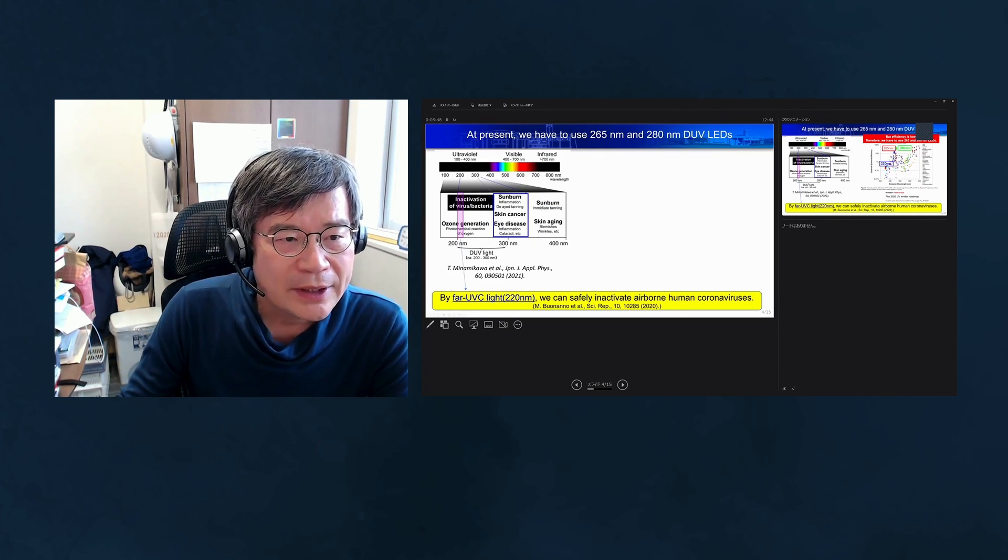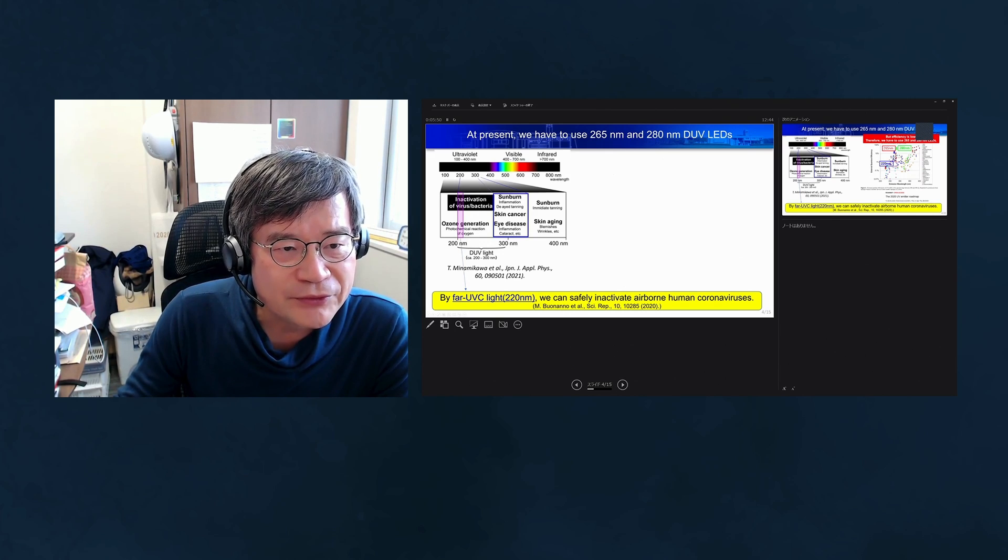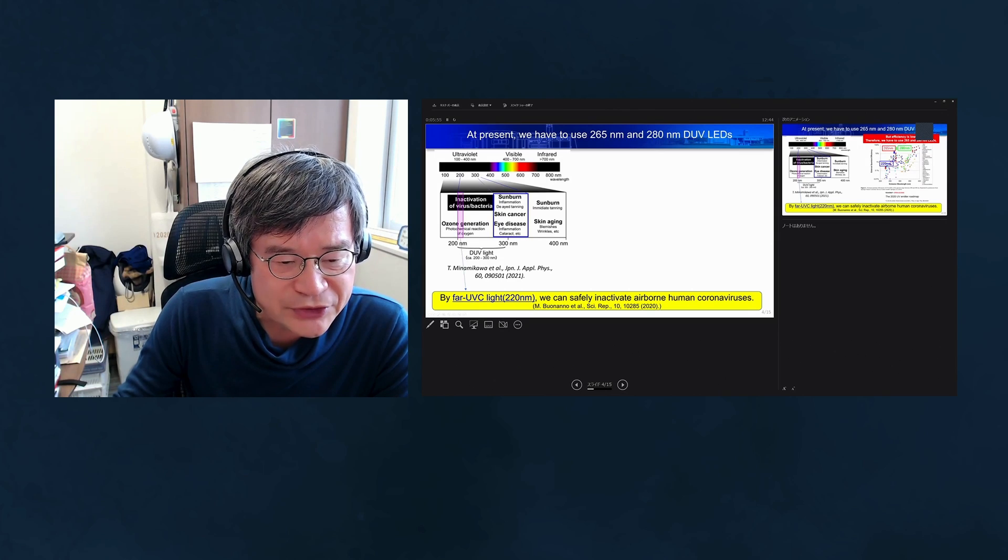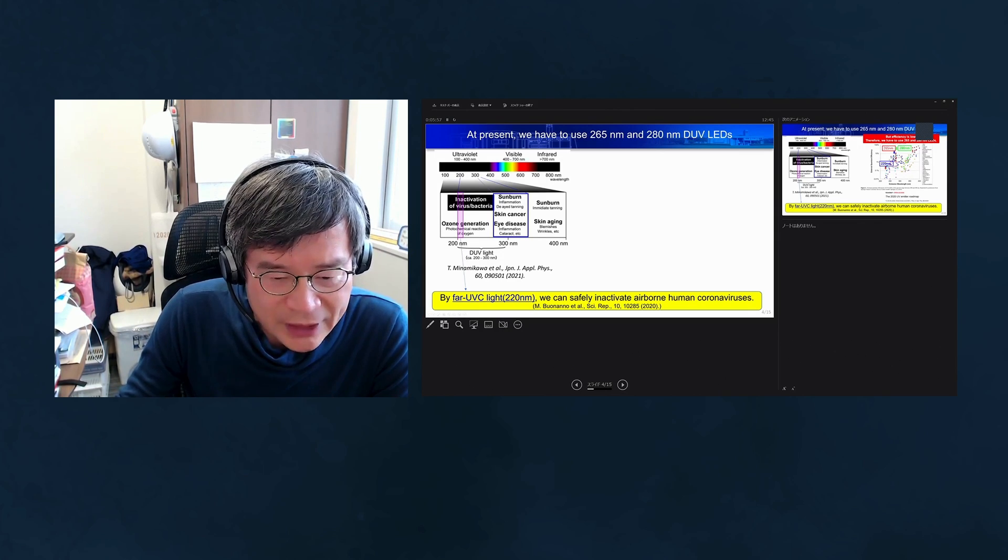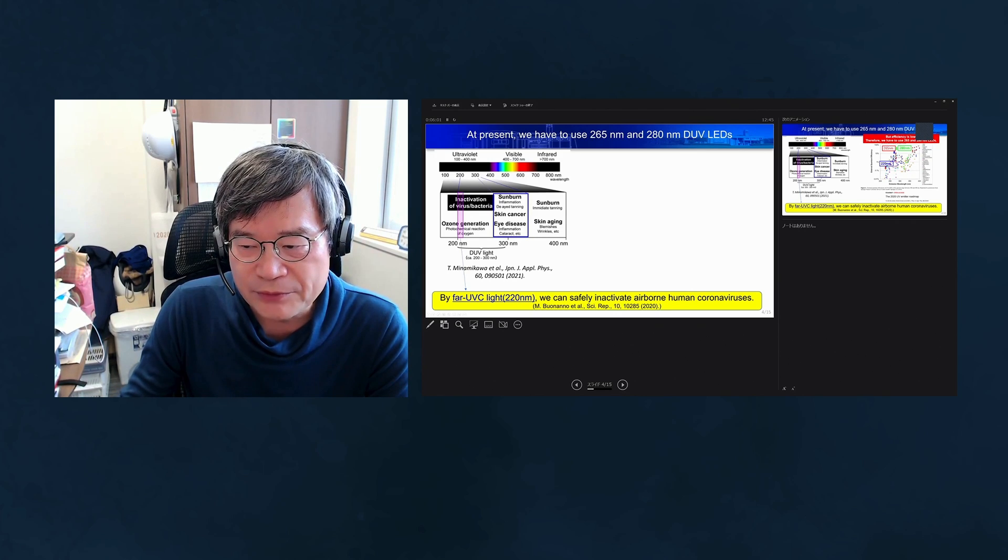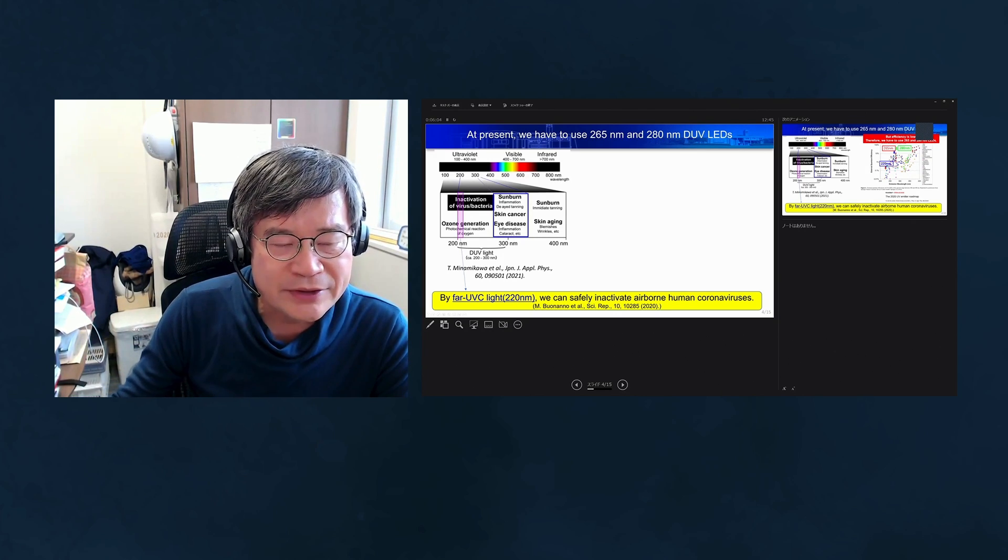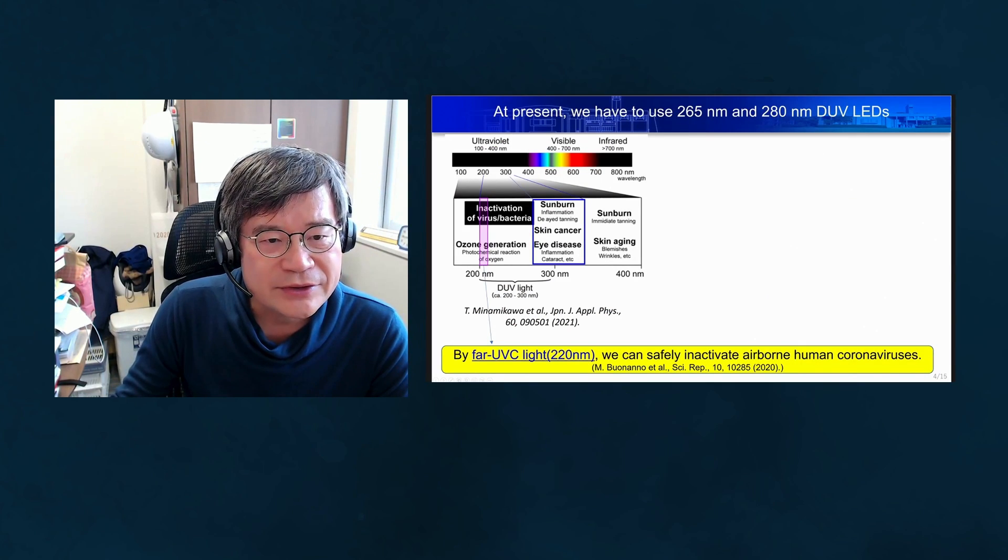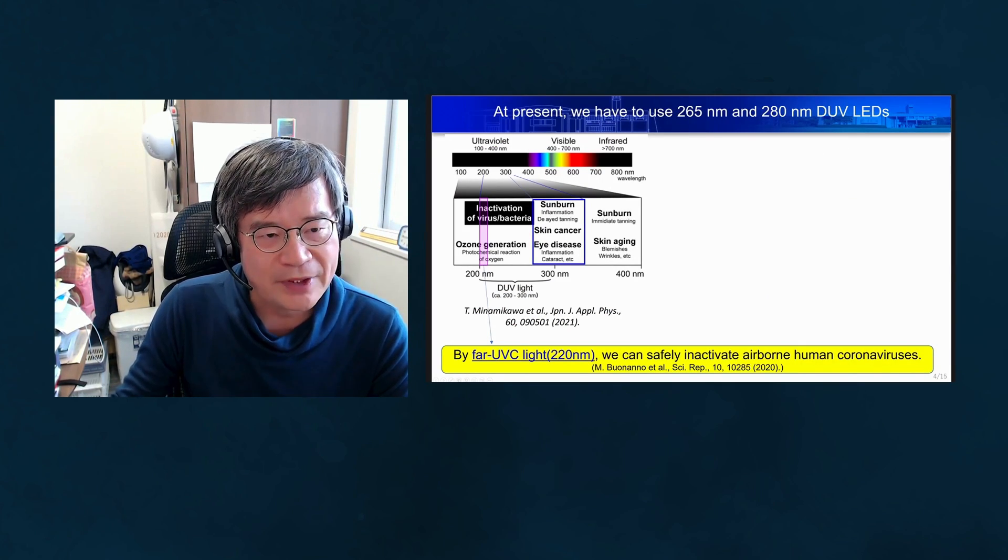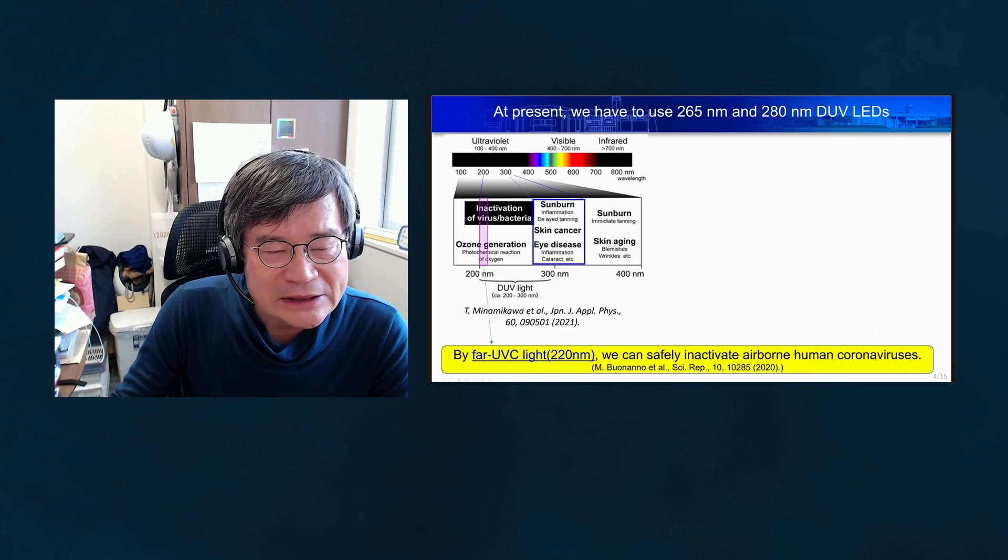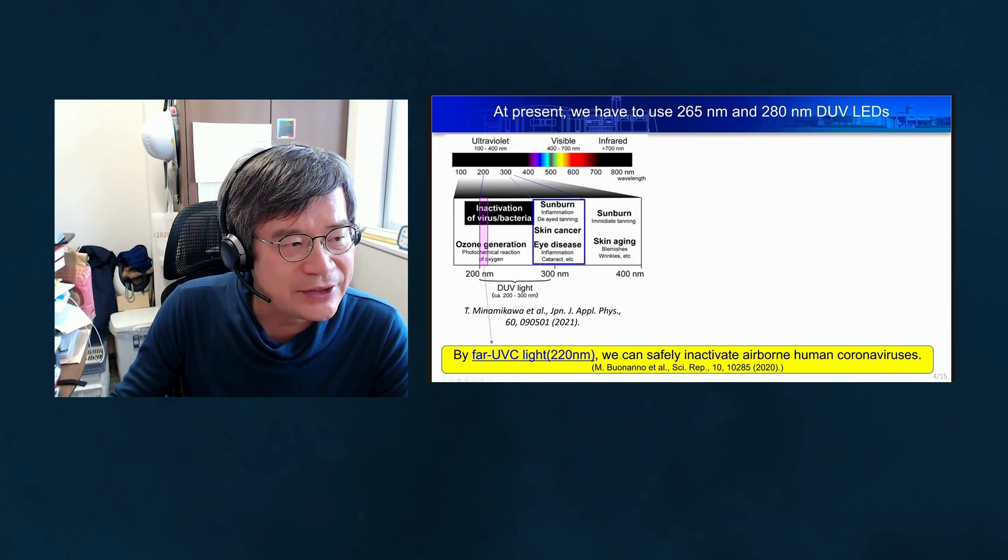In the 200 to 300 nanometer range, by using far UVC 220 nanometer light, we can safely inactivate airborne human coronaviruses or other viruses in water. If we use longer wavelengths like 260 to 280 nanometers, sunburn, skin cancer, or eye disease can occur.